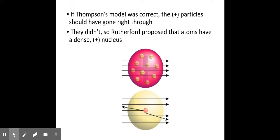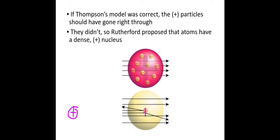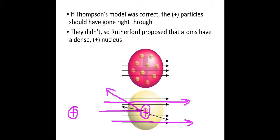Rutherford essentially discovered the nucleus by shooting alpha particles at the gold foil expecting them to go through. Most of them did, but some were deflected by something inside the atom. These are positive alpha particles being deflected by something — that thing itself must also be positive. Since most went right through, whatever is deflecting the few that didn't must be quite small. And in order to deflect a high-energy alpha particle, it must also be quite dense. So we get three properties of the nucleus: it is very small, positively charged, and very dense.